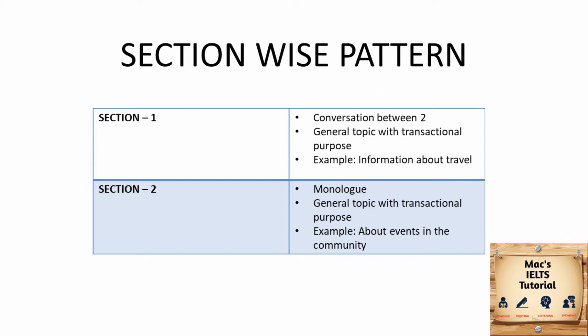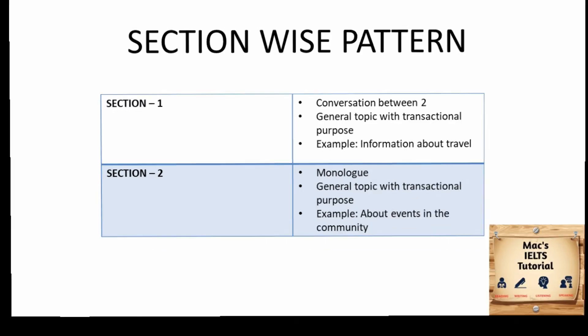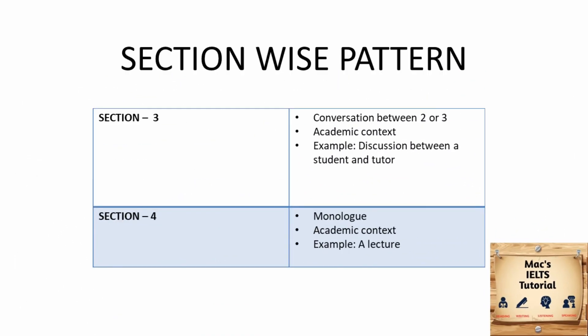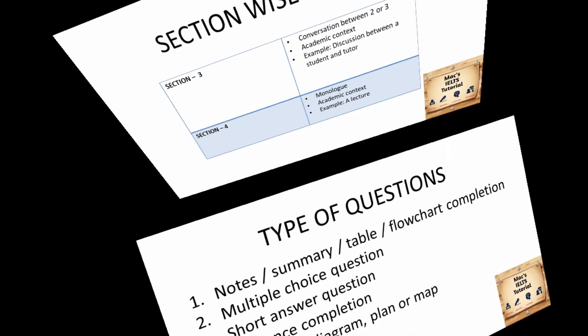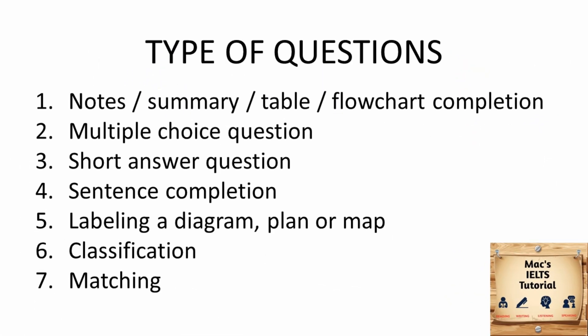Section 3 is a conversation between two or three people in an academic context, for example, a student and the tutor discussing an academic problem. Section 4 is a monologue in an academic context, example a lecture. Next we shall move on to the types of questions which will appear in an IELTS listening test.